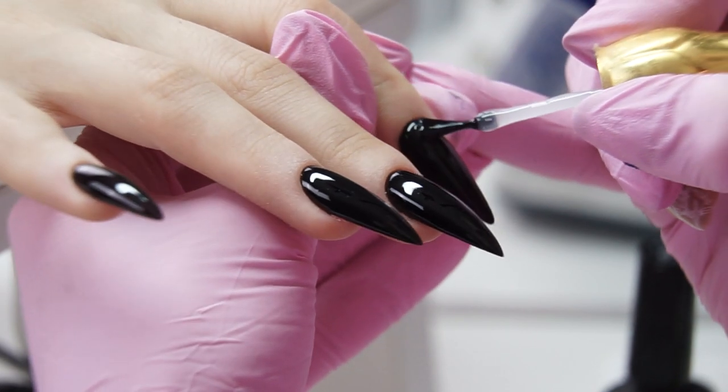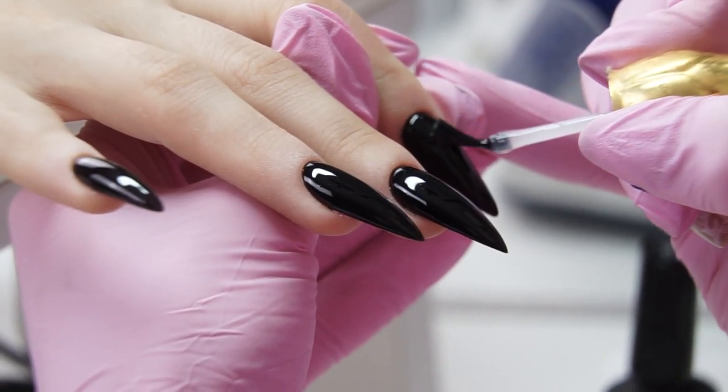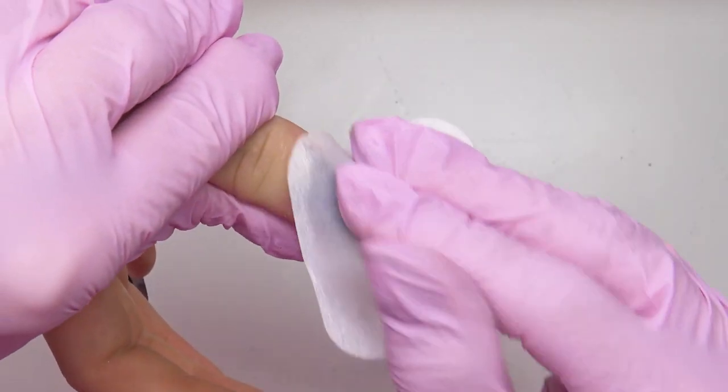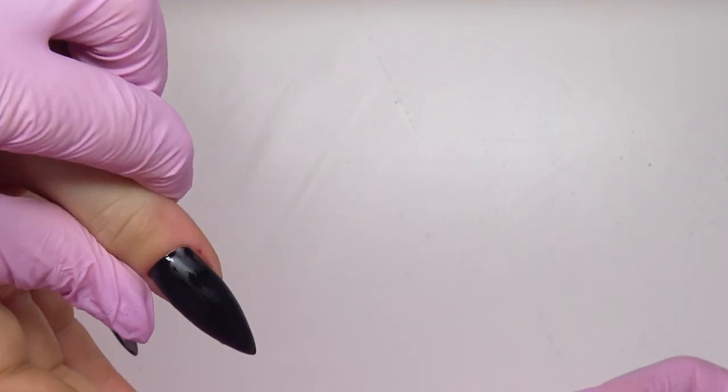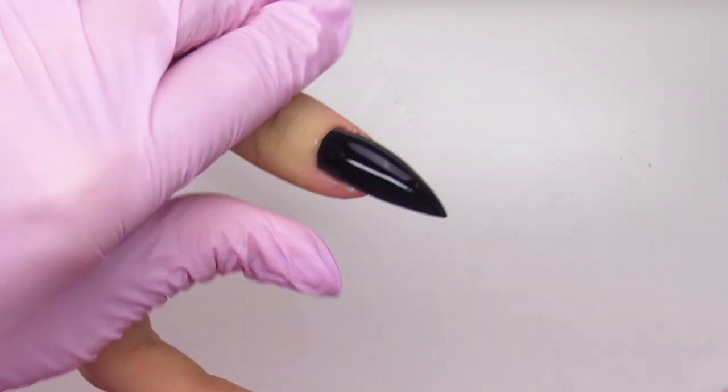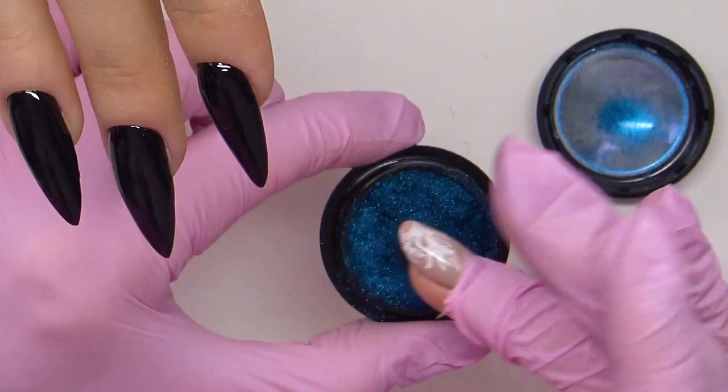On the pinky and the thumb we will rub nail powder. A life hack: for the nail powder to spread well and have that mirror effect, I'm dehydrating the surface first. Though I'm using a non-tacky top coat, once we dehydrate it, our powder will spread much smoother.